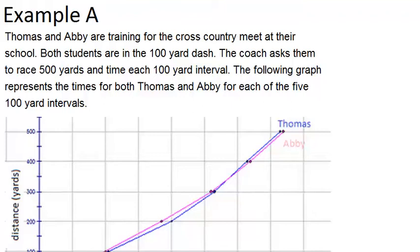In this video we will look at a few examples to practice working with double line graphs. Example A: Thomas and Abby are training for the cross-country meet at their school. Both students are in the 100-yard dash. The coach asked them to race 500 yards and time each 100-yard interval.